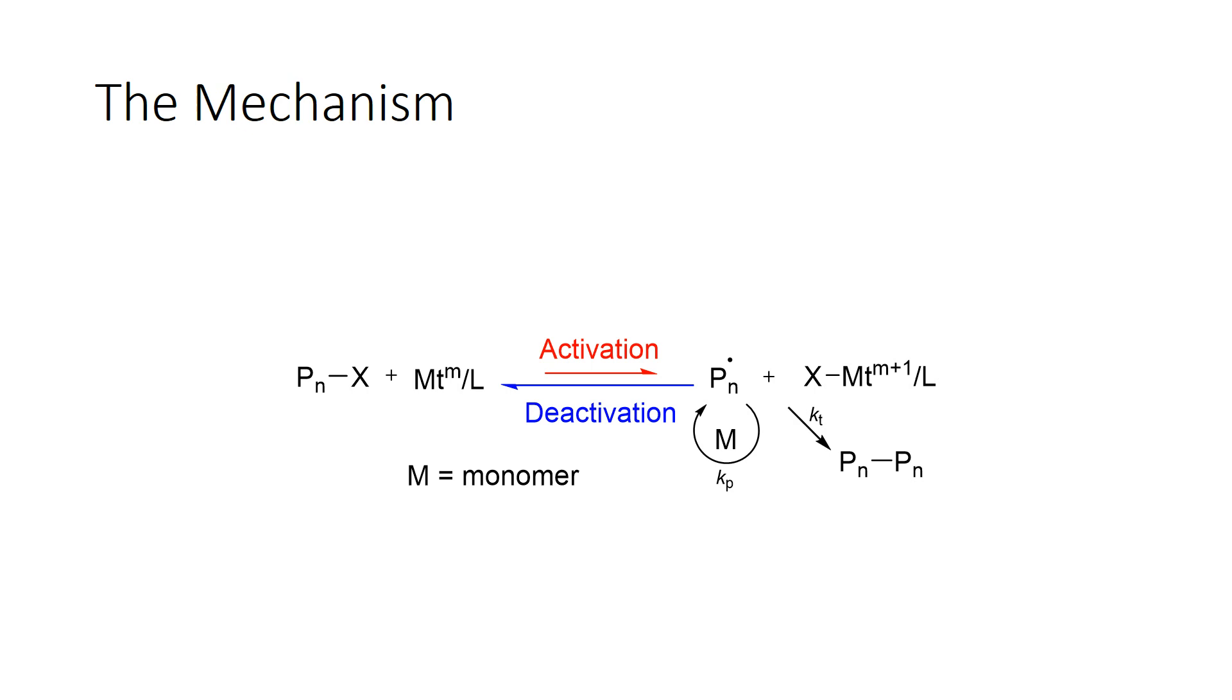But there's also undesired reactions in all kinds of polymerizations, what's called termination reactions. This is just showing one type of termination reaction where two of these propagating radicals react with each other and terminate in this bi-radical reaction here. And this is very undesirable. Other termination reactions include reaction with water or impurities.